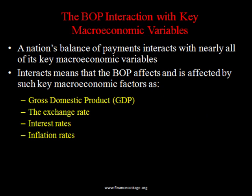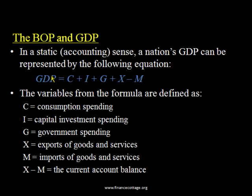Looking at how balance of payments affects GDP: the GDP formula has four major components — consumption spending, capital investment spending, government spending, and the balance of trade, which is the difference between exports and imports. If there is an excess of exports over imports, your GDP would be high, and greater exports will increase GDP.